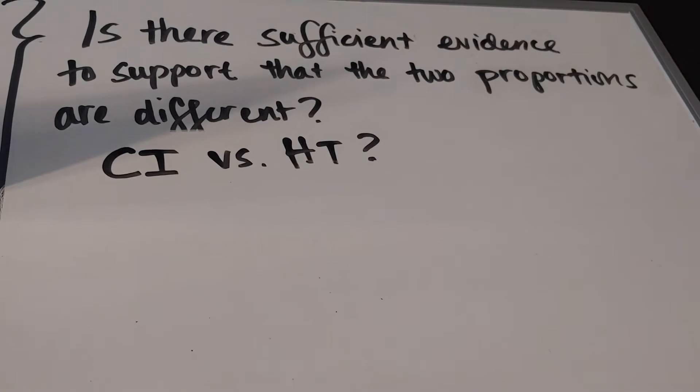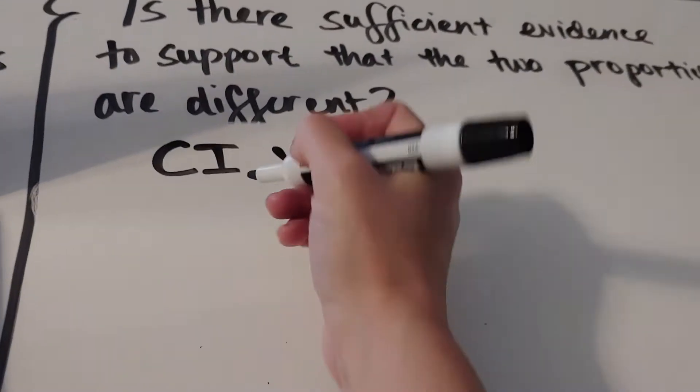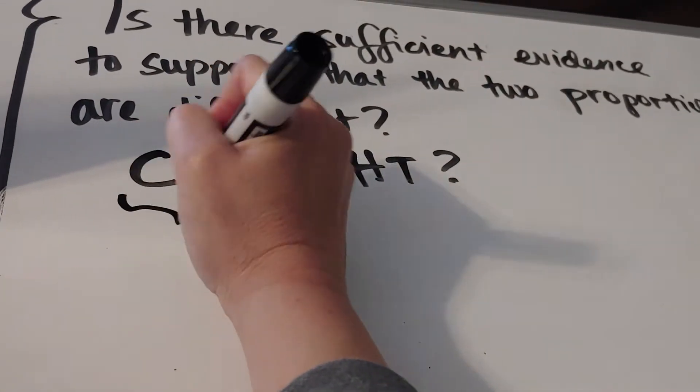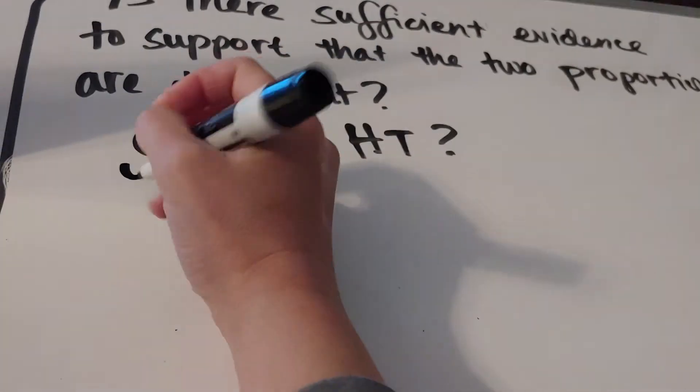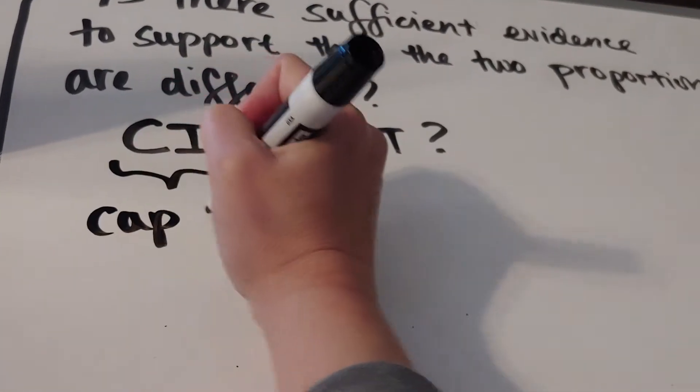And the reason you can do either is because with a confidence interval, remember, when we're doing a two-sample test, what I'm interested in is: did I capture zero or not?